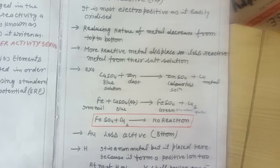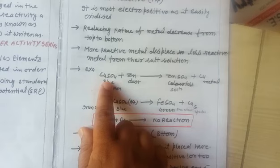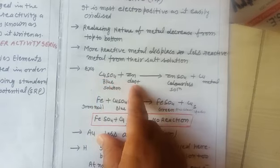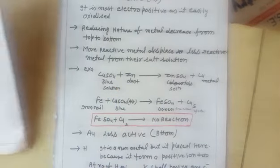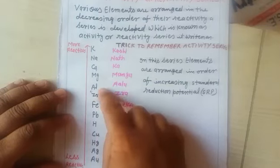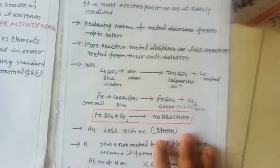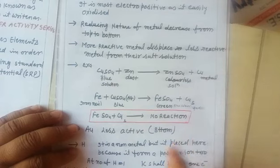With the help of this series, we can say that the more reactive metal displaces the less reactive metal from their salt solution. For example, in a solution of copper sulphate, if zinc dust is added, zinc displaces copper from the copper sulphate solution and the colour of the solution becomes colourless, because copper sulphate is blue. Zinc is placed above copper in the series, so it replaces copper and copper metal settles down.